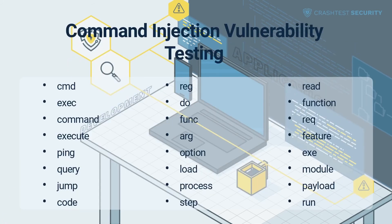Application security is a top priority, so it's essential to check your system's critical vulnerability risks regularly. To check for blind command injections, you can use various detection techniques, such as time delays, redirecting output and checking the file manually, or running an OOB network interaction with an external server.